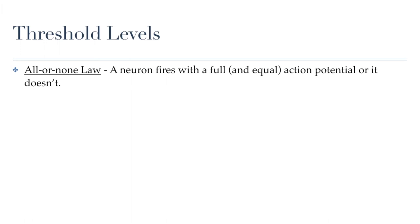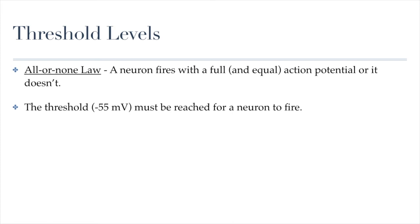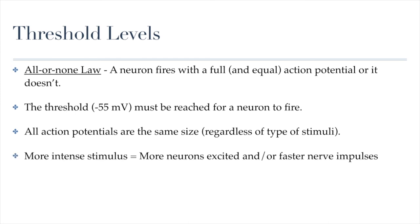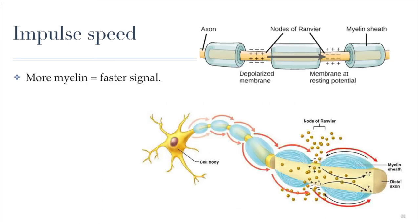This is what we call threshold levels and the all-or-none law. A neuron will fire with a full and equal action potential, or it doesn't fire at all — no half or double action potentials. The threshold is always minus 55 millivolts, and all action potentials are the same size regardless of stimulus type. A more intense stimulus means more neurons are excited simultaneously and faster nerve impulses occur, but the voltage difference is always the same. Impulse speed is controlled by the amount of myelin, which creates a faster signal, and by axon diameter — higher diameter axons also produce faster signals.